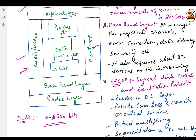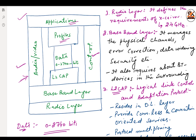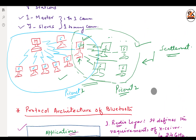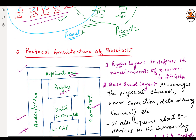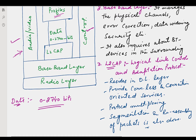This is the protocol stack and architecture of Bluetooth. In the network architecture there are two kinds of networks: Piconet, with one master and seven slaves, and Scatternet, a combination of two or more Piconets where the slave of one Piconet can work as master of another. That covers Bluetooth technology and its architecture. Thank you for watching.